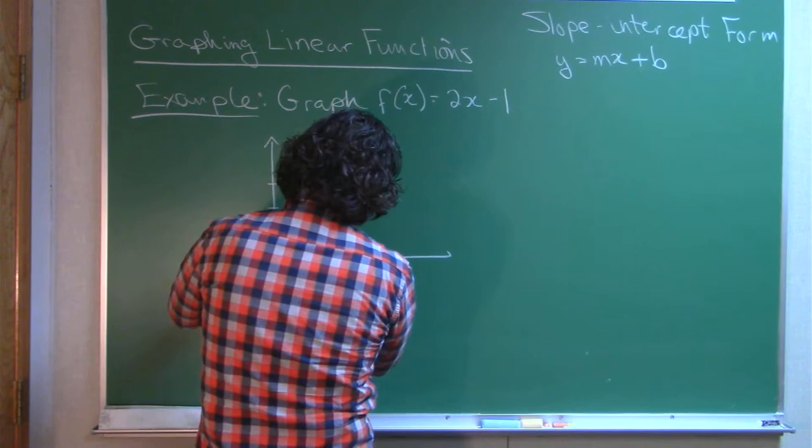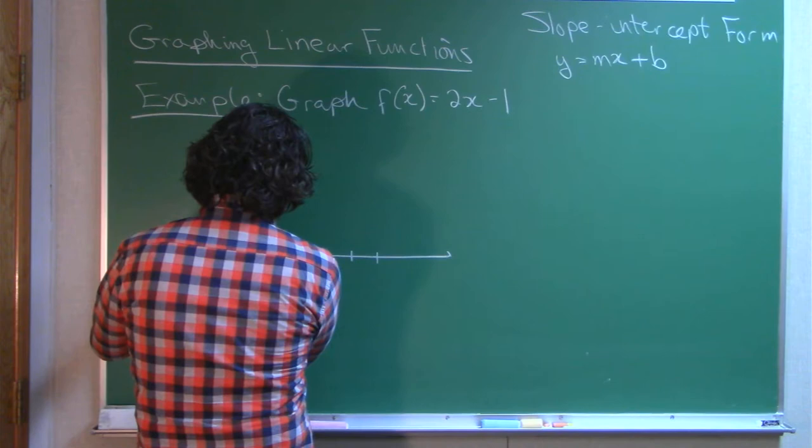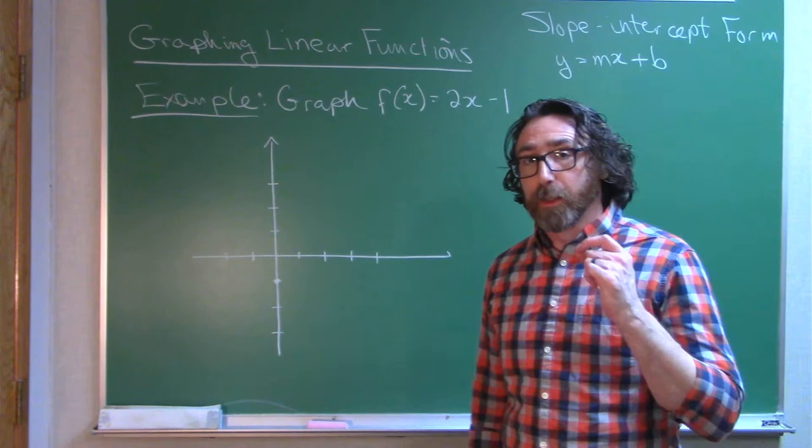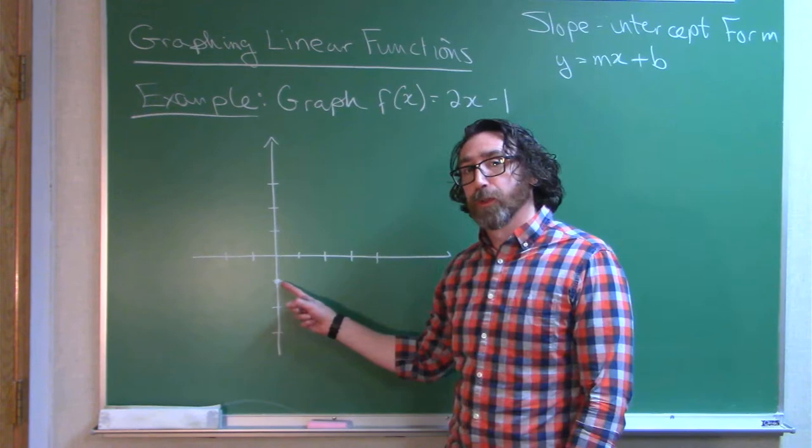So we begin by plotting a single point on our graph. The y-intercept is negative 1. And if you remember our video on reading graphs, the graph is a set of multiple input-output pairs.